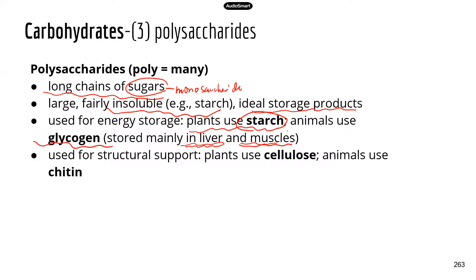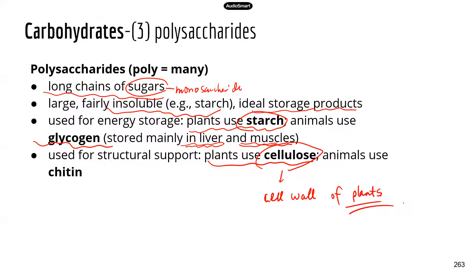Some polysaccharides are made for structural support. For example, plants use cellulose — think about the fibers in celery that are hard to break down no matter how long you chew. Cellulose is also an important component of the cell wall in plants. Remember, plants have cell walls but animal cells do not. Cellulose is what makes the plant cell wall very rigid.